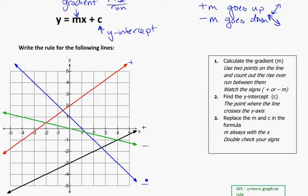So the green and blue are negative gradients, and the black and red are positive gradients. To count out the gradient, you have to pick two points on the line that are easy to read. You wouldn't want to pick a point right in the middle of the grid where it's hard to tell exactly what the value is. The trick is to always pick points that are directly on a grid line intersection — so you can clearly tell, for example, that we're at 2 and 0.